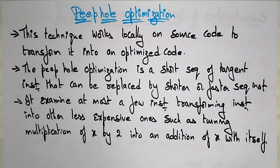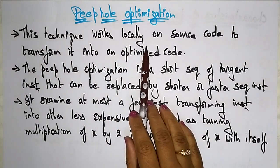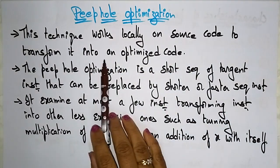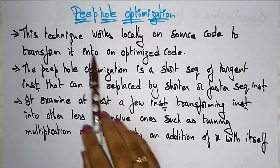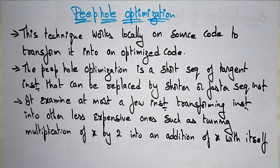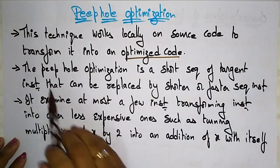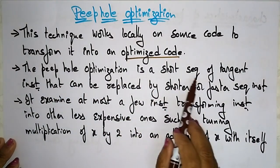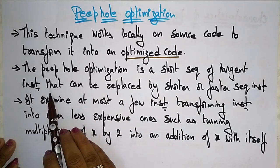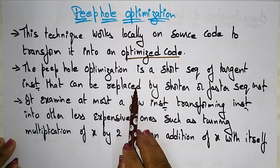Coming to the last topic in compiler design: peephole optimization. This technique works locally on source code to transform it into optimized code. Peephole optimization is a short sequence of target instructions that can be replaced by a shorter or faster sequence of instructions.